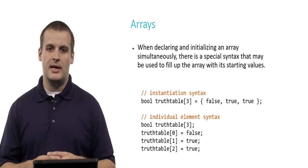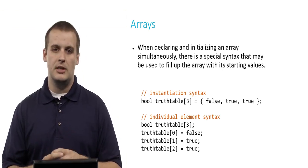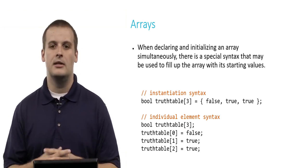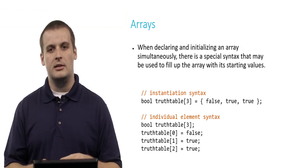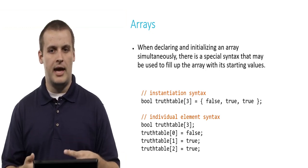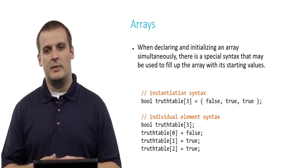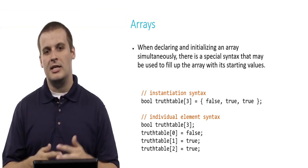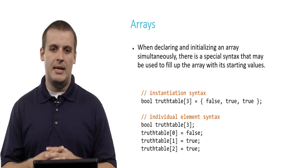When you declare and initialize an array simultaneously, there's a special syntax you can use to fill up the array with its starting values. For example: bool truth_table[3] = {false, true, true}. This creates an array of size 3 called truth_table with elements false, true, and true. In fact, this instantiation syntax is exactly the same as doing the individual element assignment syntax — these two ways of coding produce the exact same array.